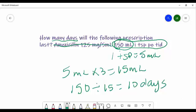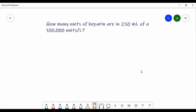Got it? Okay, not too hard at all. Let's do another one. It says, how many units of heparin are in 250 milliliters of a 100,000 unit per liter? Okay, so what we're going to need here is 250 mL, 100,000 units. If you did not know, one liter equals 1000 mL.